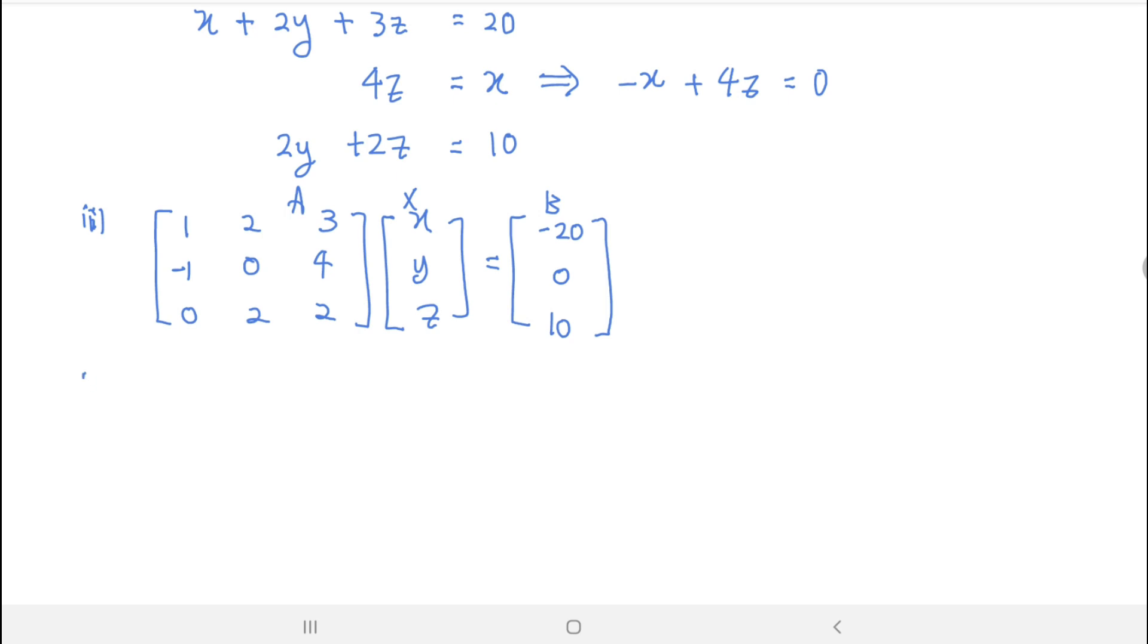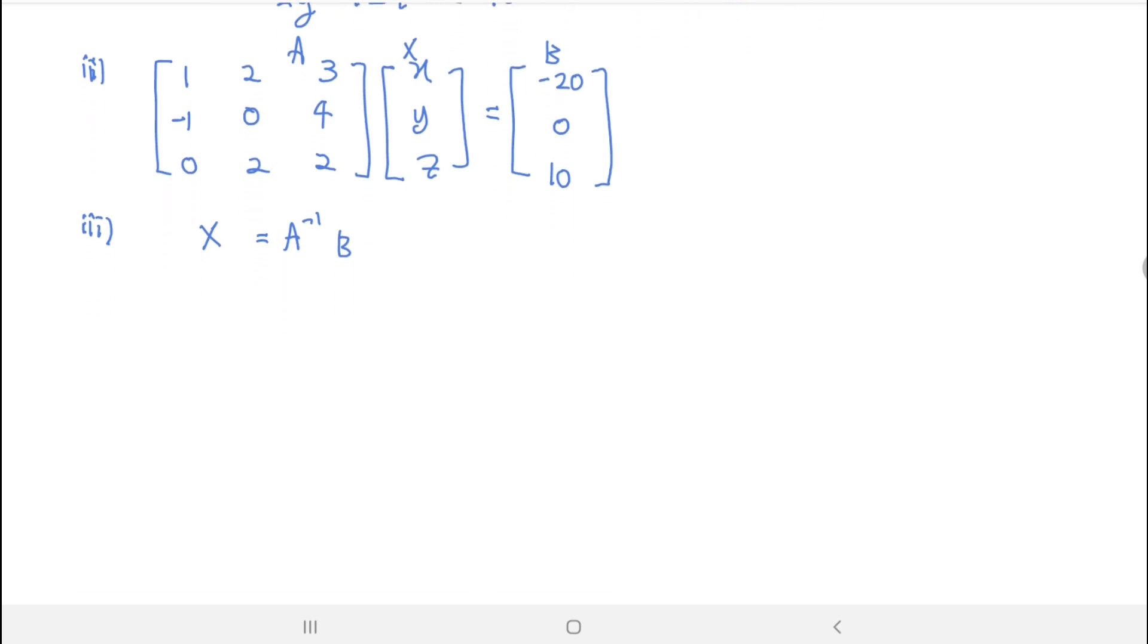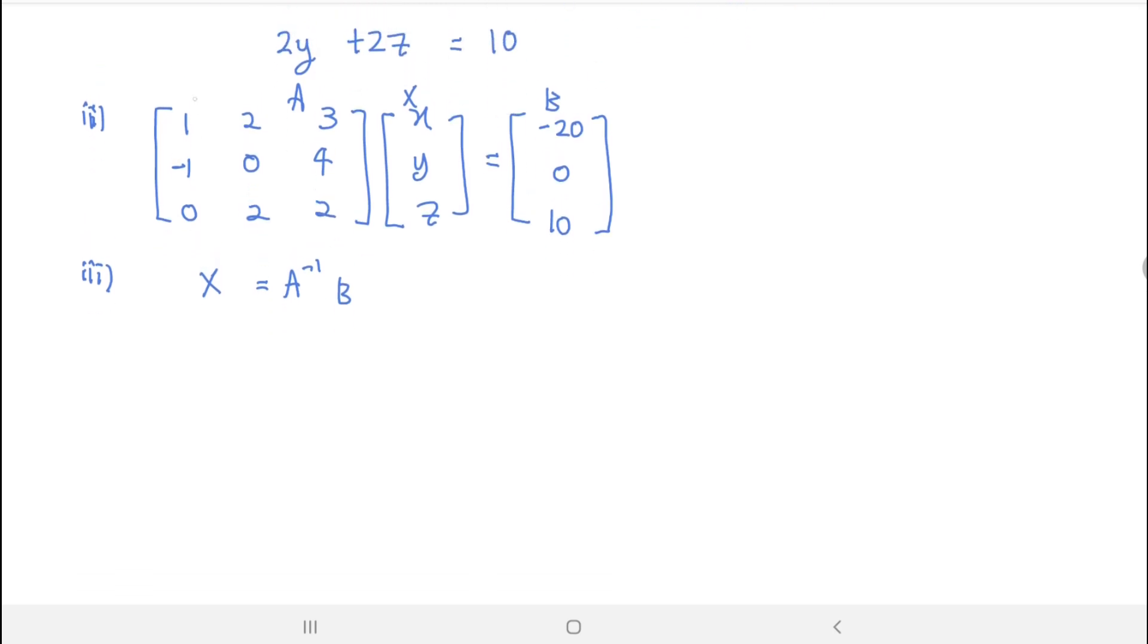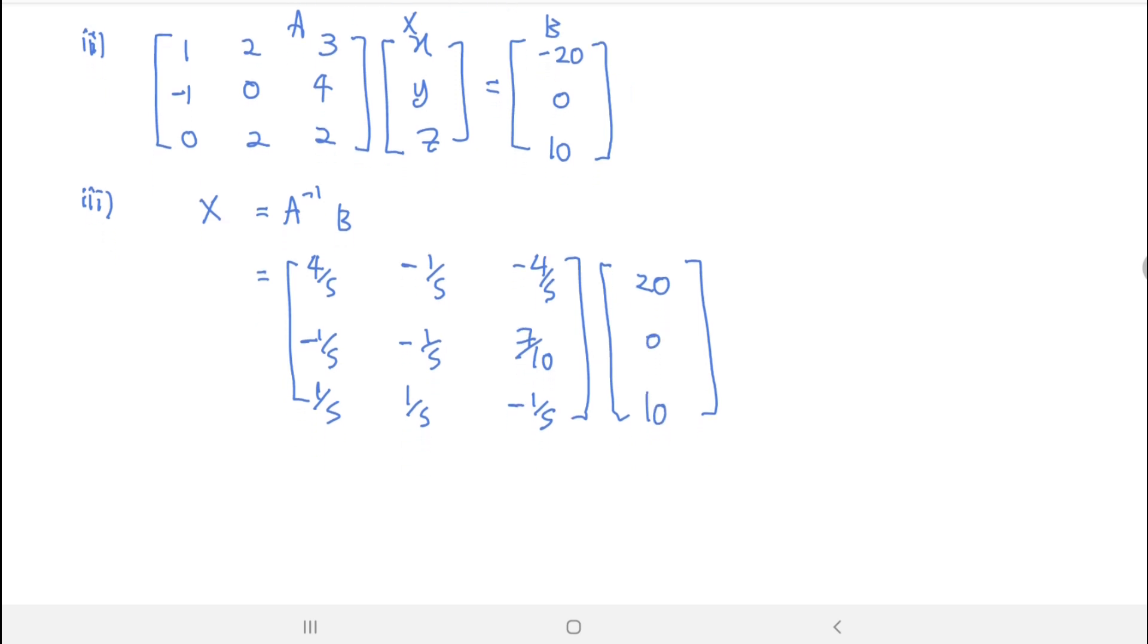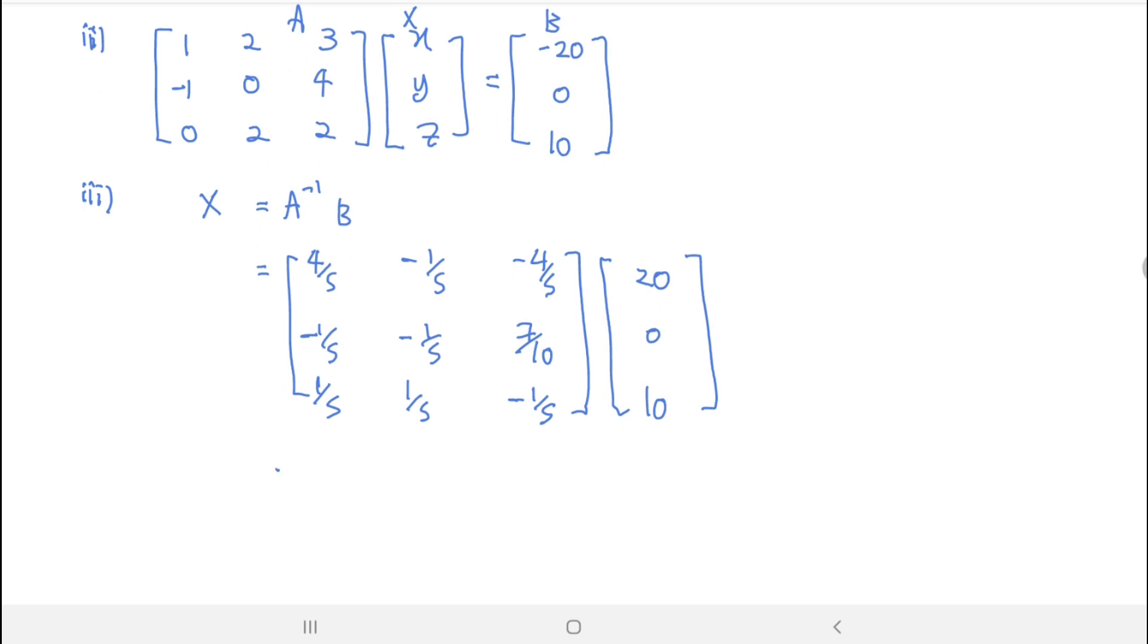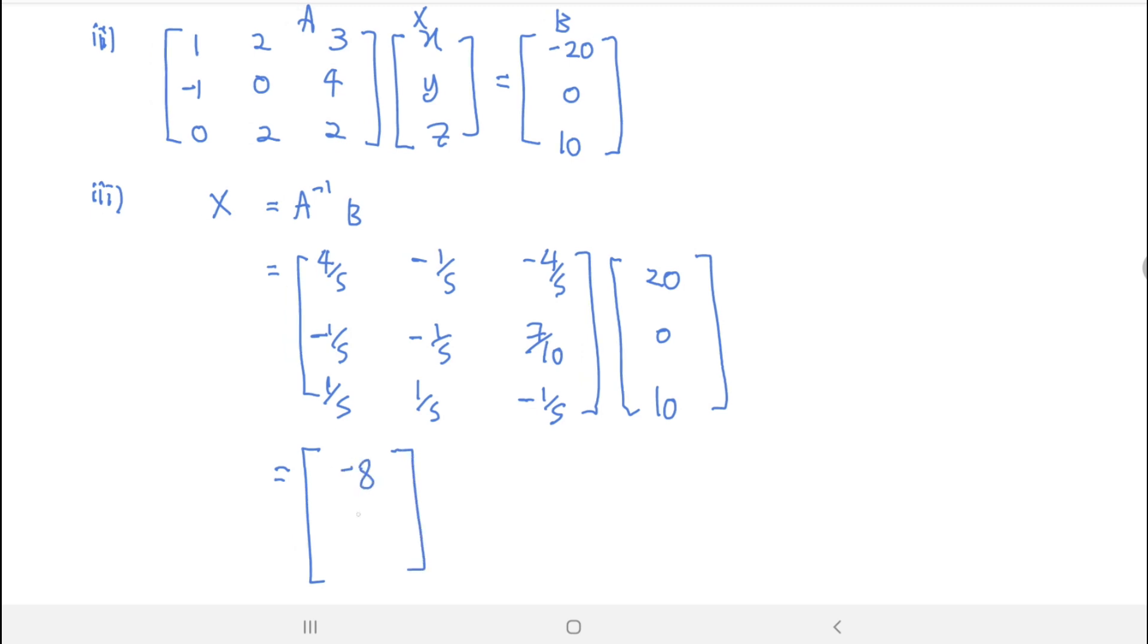For part 3, since X equals A inverse B, by using adjoint you have already found the inverse of this matrix in question part A. So you just take the answer A inverse: 4 over 5, negative 1 over 5, negative 4 over 5; negative 1 over 5, negative 1 over 5, 7 over 10; 1 over 5, 1 over 5, negative 1 over 5. And then B is 20, 0, and 10. Again, by using the knowledge of multiplication of two matrices, you will get the answer will be 8, 3, and 2.